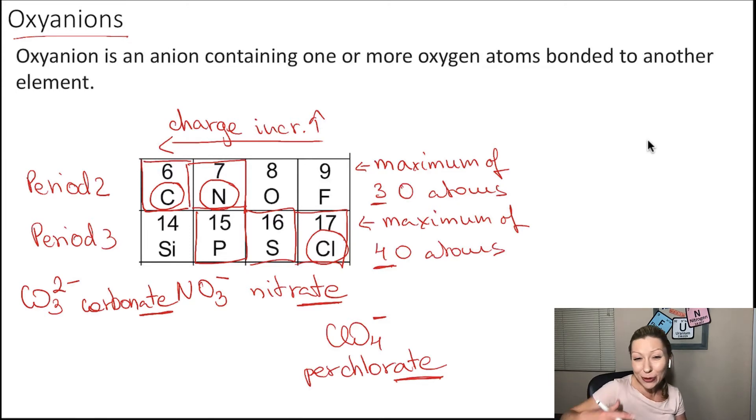What's up with sulfur? I'm again going to have SO4, right? Because of the maximum of four oxygen atoms. And I have to increase the charge. This is going to be two minus. This is going to be called the sulfate ion. Again, I ended with -ate.